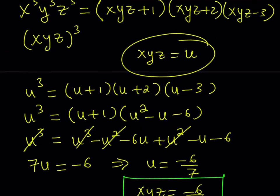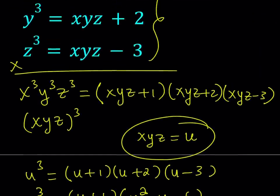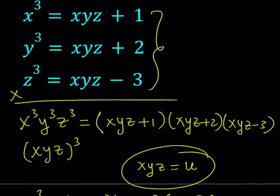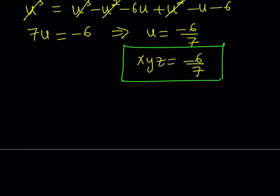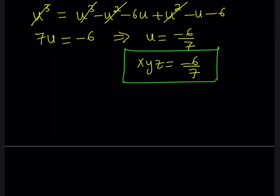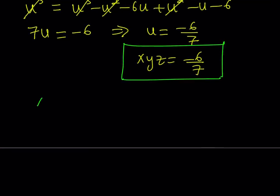Remember, our system gives x cubed, y cubed, z cubed, all of them, in terms of xyz. So we can just go ahead and substitute everything. So let's see what we can do. We can just go ahead and replace xyz with negative 6 over 7 in each equation.